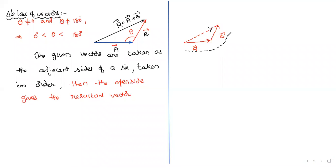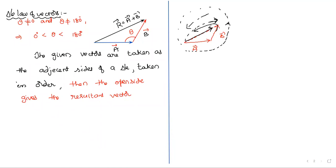Look: A and B are arranged in order in anti-clockwise direction. But the resultant dotted one is in clockwise direction. So if these two are arranged in anti-clockwise, the resultant is found in opposite order — reverse order. The open side gives the resultant vector, but in opposite order — reverse order.